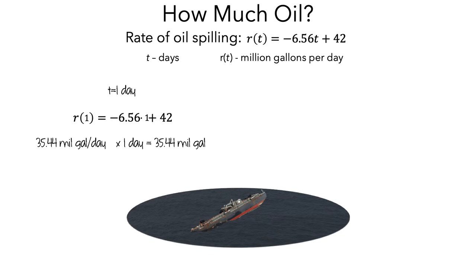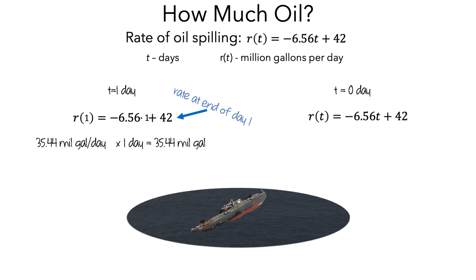If we think about that first estimate, what we did was calculate the rate of spilling right at the end of the first day. But the oil was spilling faster at the start of the first day. That is, if we looked at T equals 0, which corresponds to the start of the first day, and used the rate formula and plugged zero in, we would get 42 million gallons per day. And if we used this rate for 1 day, we would get an estimate of 42 million gallons of oil that spilled.